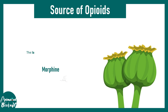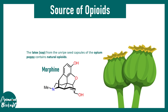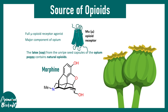Morphine is basically a derivative from the poppy plant. From the opium poppy, the sap contains natural chemicals known as opiates, and morphine is one of them — it's a major component of opium. Morphine binds to a specific type of receptor known as opioid receptors. If you want to know more about opioid receptors, there is a separate video linked in the i button.